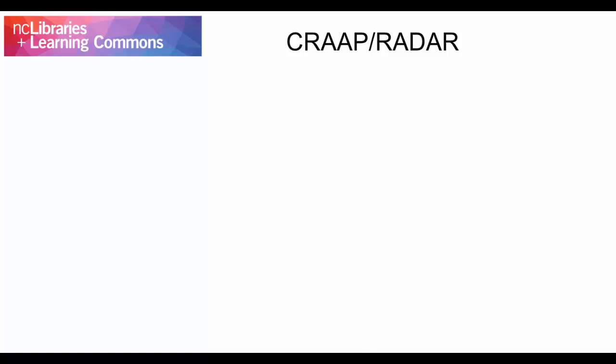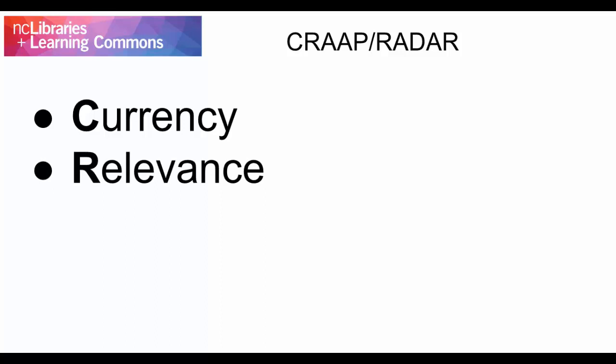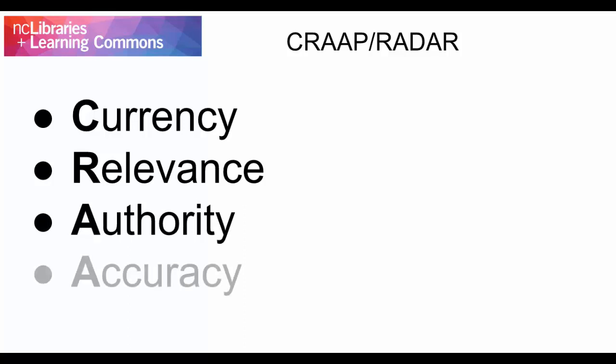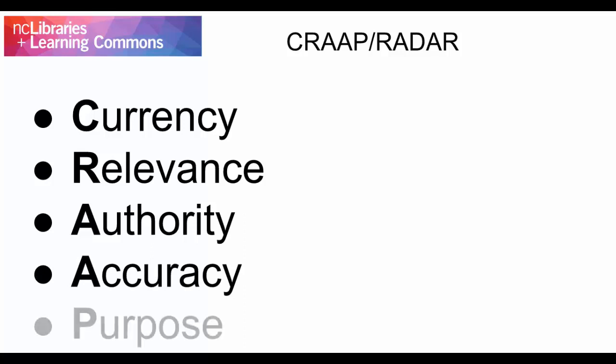There are two acronyms you can use to remember the criteria discussed in this tutorial. One is CRAAP: C is for currency — when was the website last updated? R is for relevance — does it relate to your topic in a meaningful way? The first A is for authority — who posted the material? The second A is for accuracy — what evidence is presented to support the information? And P is for purpose — why was the information created?